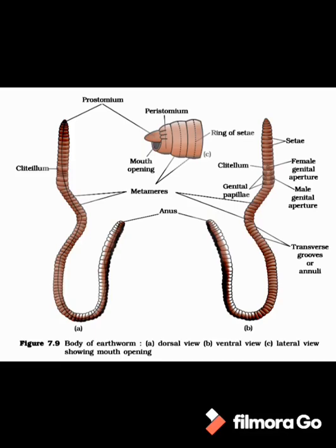Due to the presence of clitellum, the body of earthworm is divided into three parts: pre-clitellar region, clitellar region, and post-clitellar region. On each segment of the earthworm body, a row of S-shaped locomotory structures called setae are present. Setae are embedded in the epidermis of its body wall. Four pairs of spermathecae are present, one pair each from segment number 6th to 9th.